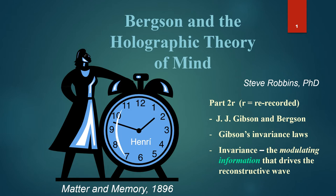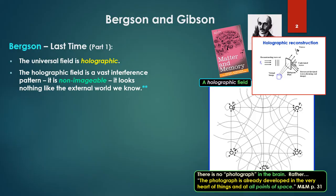Bergson Holographic Theory of Mind, Part 2. This is re-recorded from the original to make things faster and smoother. This will be about J.J. Gibson and Bergson - how Gibson, the great theorist of perception, has to be put in Bergson's framework, in his holographic framework. We're looking at Gibson's invariance laws, the notion that these invariance laws form the modulated information that drives the brain as a reconstructive wave in Bergson's framework.